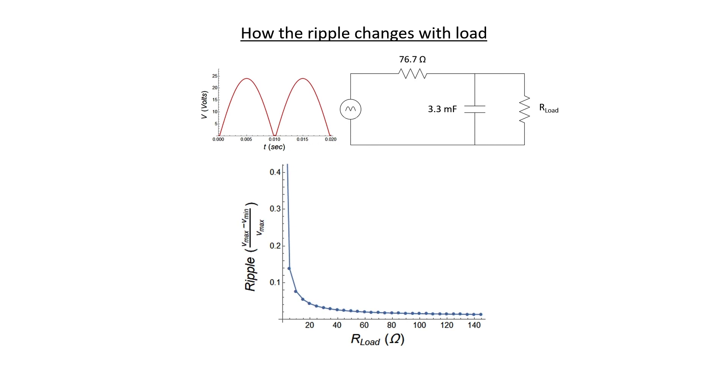However, as the load resistor gets smaller and smaller, or in other words, it starts to draw more and more current from your power supply, then the ripple is going to get worse and worse. What I hope that you've learned from this video is that by using things like phasors, by using things like Fourier analysis,